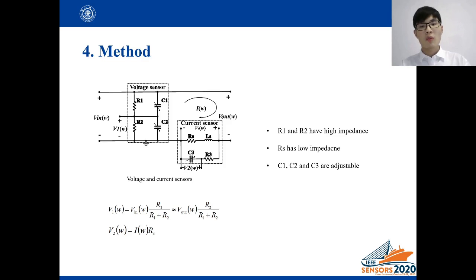The output of voltage sensors and current sensors are calculated as the following equations. C1 and C2 are manually adjustable capacitors to eliminate the effects of the parasitic components of R1 and R2. In the same way, C3 and R3 eliminate the effects of the parasitic inductor of RS.